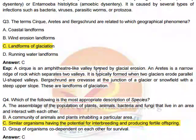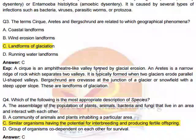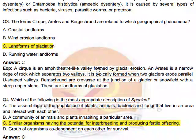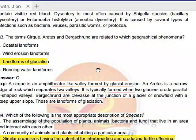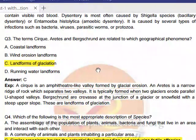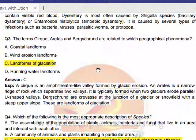The terms cirque, arête, and bergschrund are related to landforms of glaciation — not coastal landforms. A cirque is an amphitheater-like valley formed by glacier erosion. An arête is a narrow ridge of rock that separates two valleys, typically formed when two glaciers erode parallel U-shaped valleys. A bergschrund is a crevasse at the junction of a glacier or snowfield with a steep upper slope.